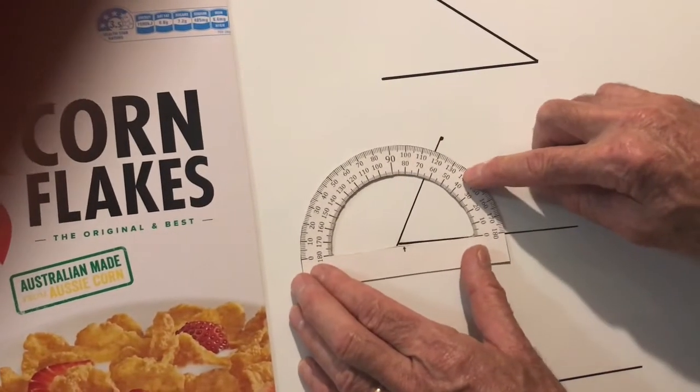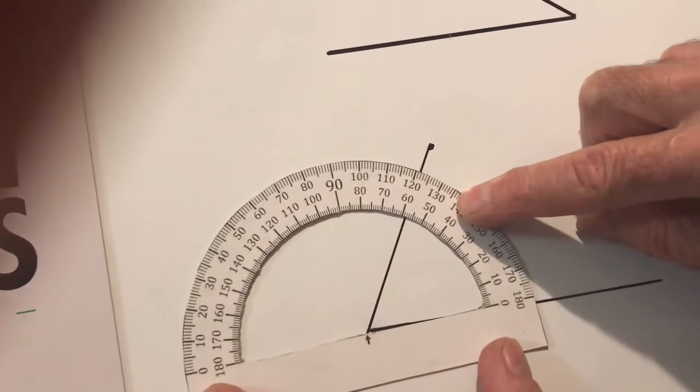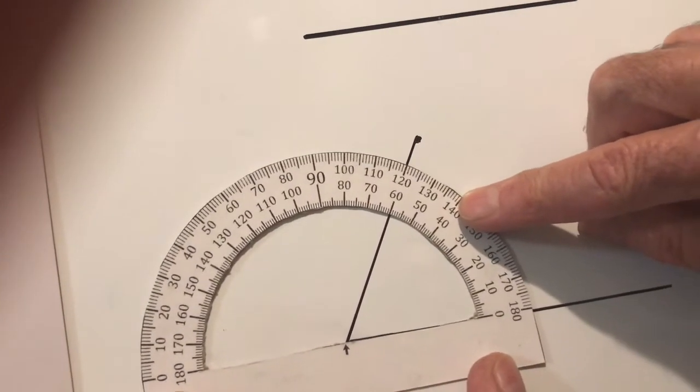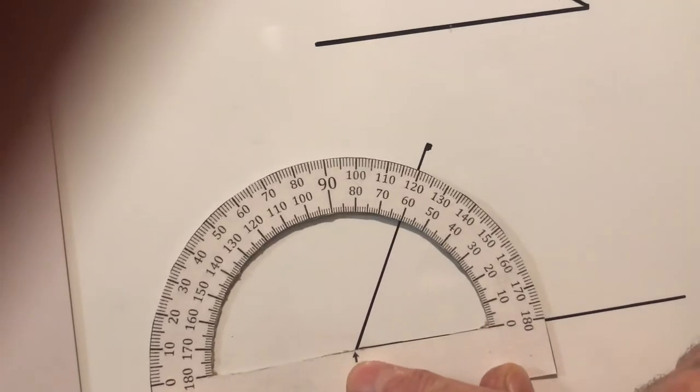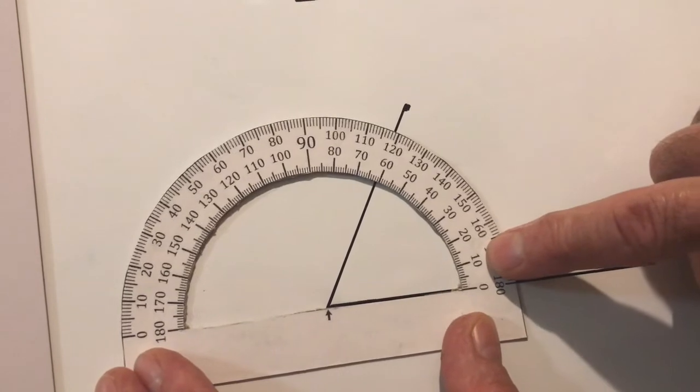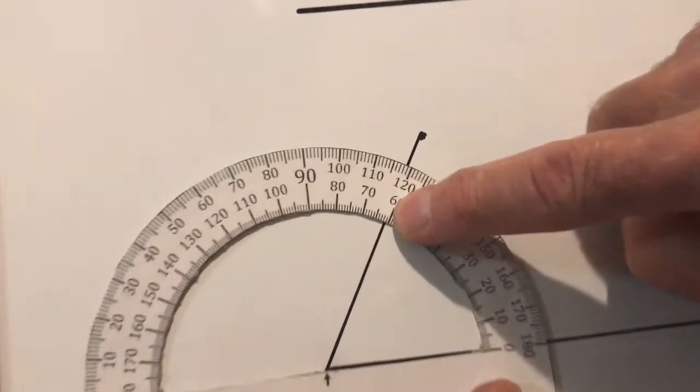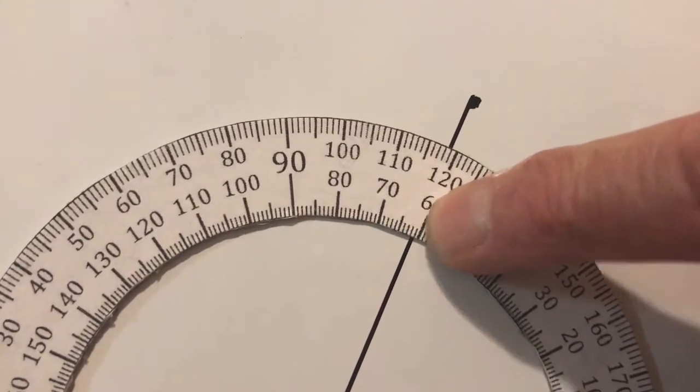What I do is I turn my protractor and I just measure on the inside. I line up, I center it. I put my zero on the baseline and I look in the middle: 10, 20, 30, 40, 50, 60 and the small one, 61 degrees.